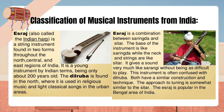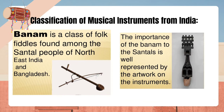SRaj, also called the Indian harp, is a string instrument found in two forms throughout the north, central and east regions of India. It is a young instrument by Indian terms, being only about 200 years old. The Dilruba is found in the north, where it is used in religious music and light classical songs in urban areas. SRaj is a combination between Sarangda and Sitar — the bass of the instrument is like Sarangda while the neck and strings are like Sitar. It gives a sound very much like Sarangi without being as difficult to play, and is popular in the Bengal area of India. Banam is a class of folk fiddles found among the Santal people of Northeast India and Bangladesh; the importance of the Banam to the Santals is well represented by the artwork on the instruments.